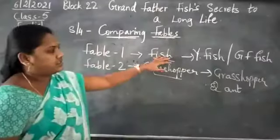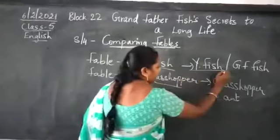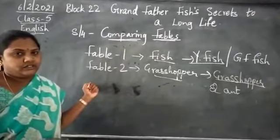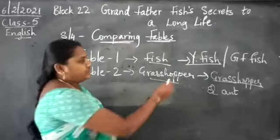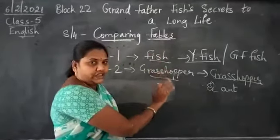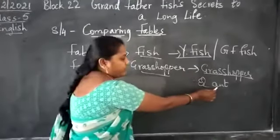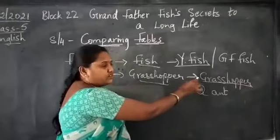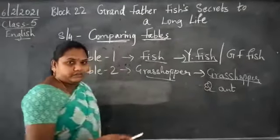Two characters are there in this and two characters are there in this. Who is the main character in both the fables? Here it is the young fish and here it is the grasshopper. The young fish was disobedient — he did not listen to the advice of the grandfather. The grasshopper also did not listen to the advice of the ant, was lazy, did not work hard, and wasted its time by playing only.